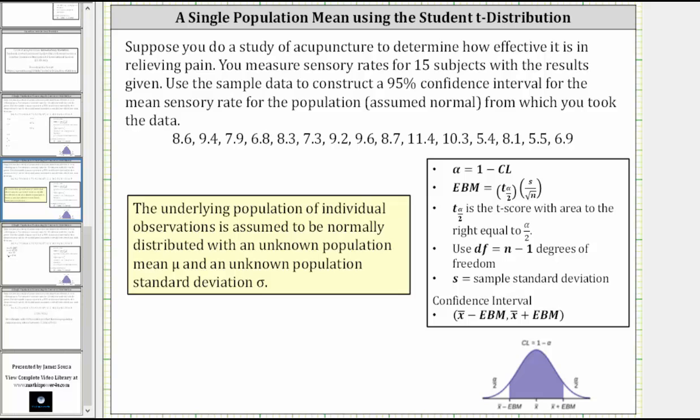This example will show how to construct a confidence interval for a population mean using the student t distribution. For the student t distribution, the underlying population of individual observations is assumed to be normally distributed with an unknown population mean and an unknown population standard deviation.